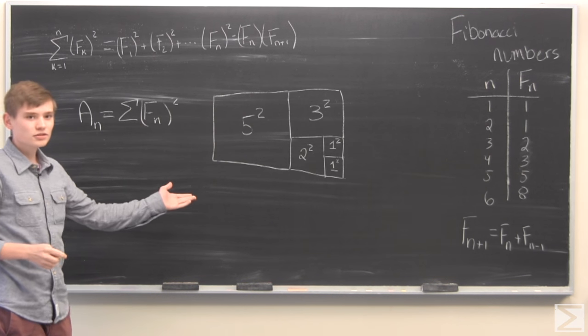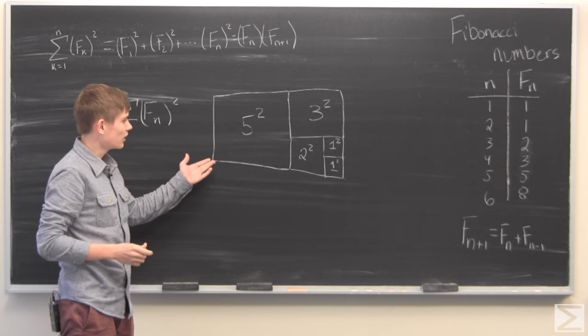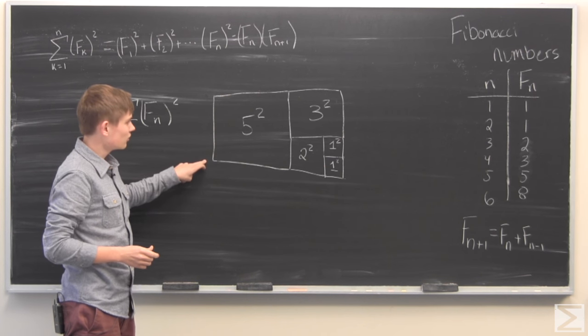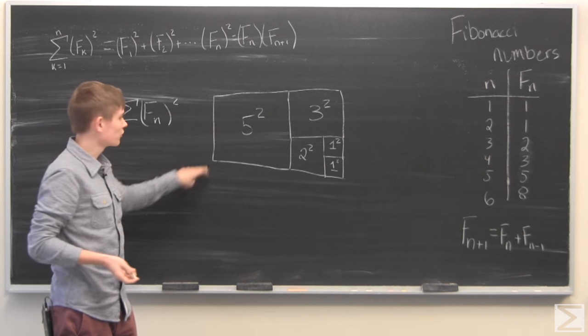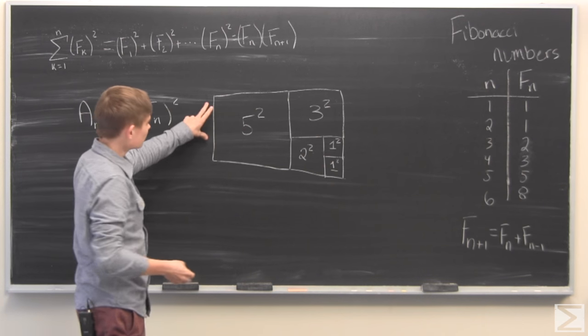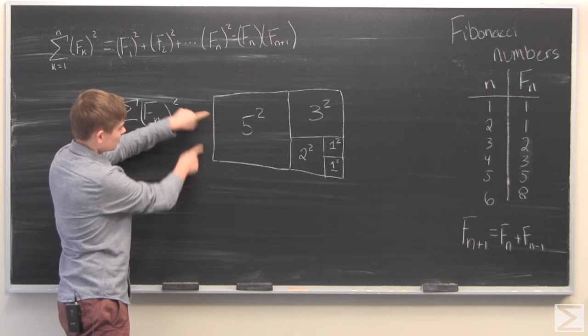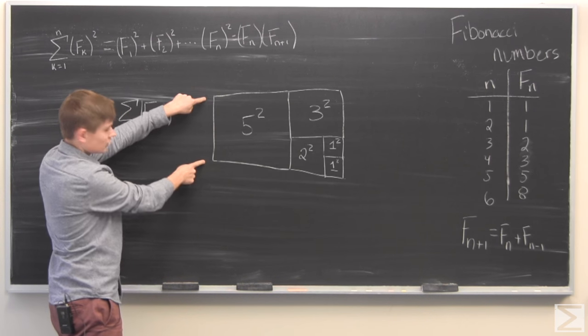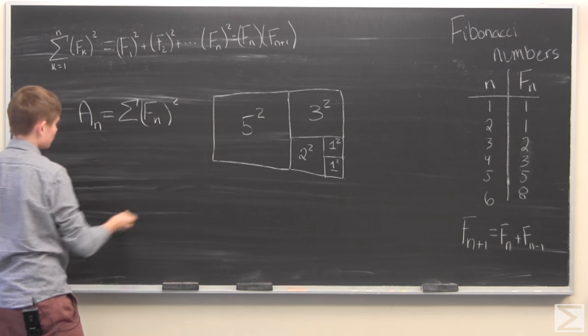And what we can also do is find the area by just calculating it through the rectangle area formula. We went up to the nth Fibonacci number. And so the length of this is the nth Fibonacci number, which in this case is 5.